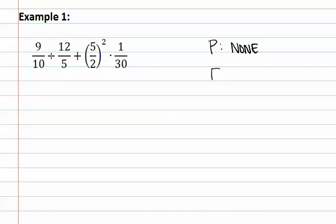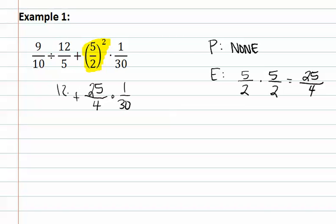We then move on to E for exponents. As you can see, there is an exponent. So we do this step off to the side, which is 5 halves times 5 halves, which means we get 25 fourths. So we place this back into the problem, and we carry down everything else from above.